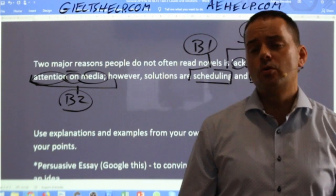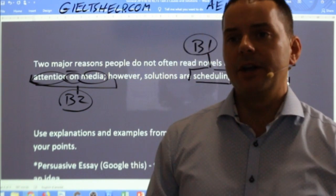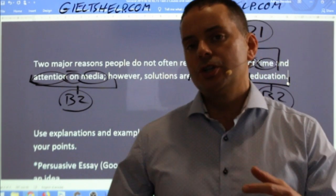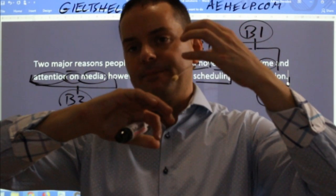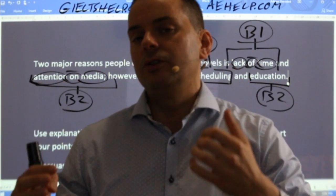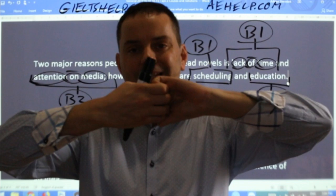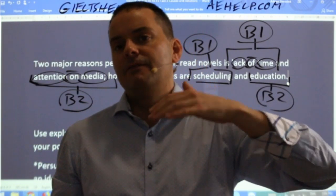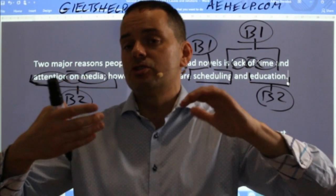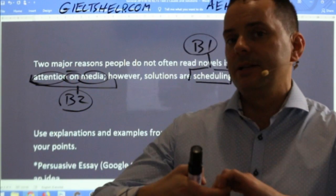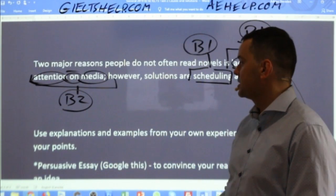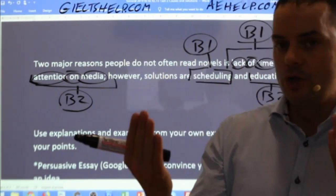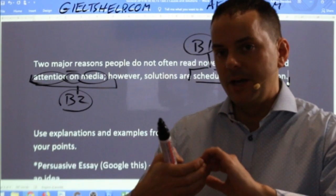Dilpreet asks: can I write body paragraph one as all problems, body paragraph two as all solutions? If the problems and solutions are not strongly connected, that's a good way to do it. But if the problem and solution are closely related — like not enough time, create a schedule — then write them into one body paragraph. The visual media and making books interesting is more loosely connected but will still fit well into one body paragraph.